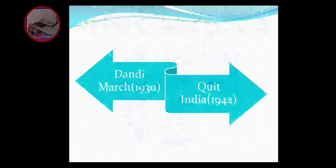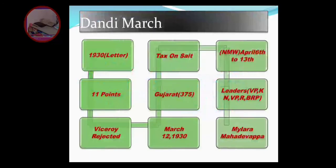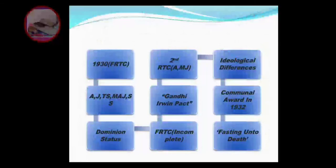The Dandi March and Quit India Movement are also important for your future, not just for the exam. About the Dandi March - Gandhi wrote a letter in 1930 mentioning 11 points. When the Viceroy rejected them, Dandi March started. Gandhi said you should not put a tax on salt. They went to Gujarat with 375 members, and then 380 protesters marched. It started in March 1930 and went on to April 6 to 13th. Mylara Mahadevappa also played an important role.